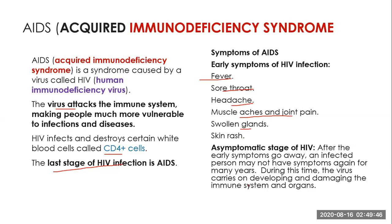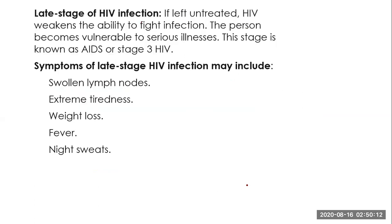These are the early symptoms of HIV. HIV can also become asymptomatic. After the early stage, an infected person may not show symptoms again. During this time, the virus damages more of the immune system and organs, but it is asymptomatic. If HIV infection is untreated, it is very much dangerous. The later stage of HIV infection presents symptoms like swollen lymph nodes, extreme fatigue, fever, and night sweats.